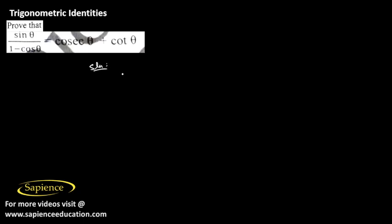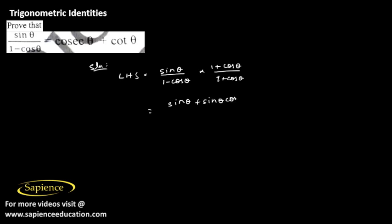Here the left hand side is sin theta divided by 1 minus cos theta. Now if we multiply and divide this with 1 plus cos theta, we get sin theta into 1 is sin theta, plus sin theta into cos theta is sin theta cos theta, divided by 1 minus cos theta into 1 plus cos theta which is 1 minus cos square theta. And 1 minus cos square theta is nothing but sin square theta. So this can be written as sin theta plus sin theta cos theta, divided by sin square theta.